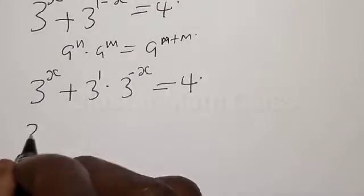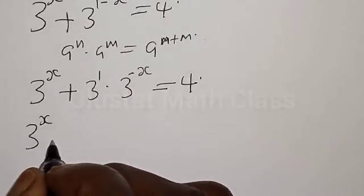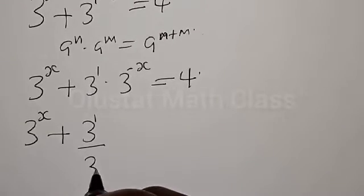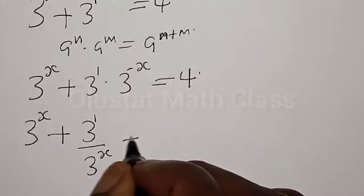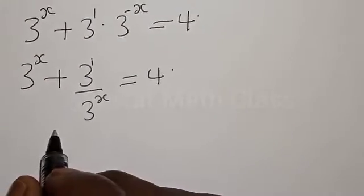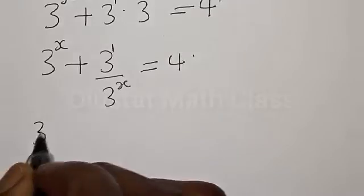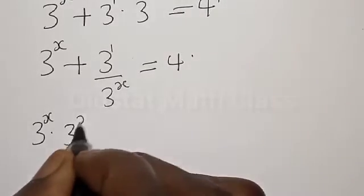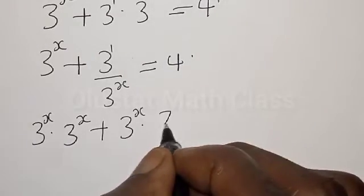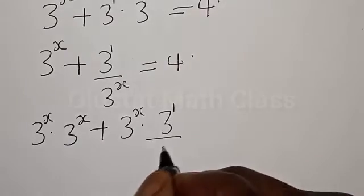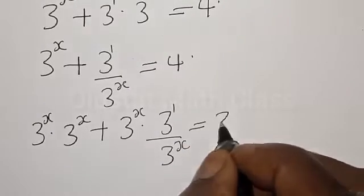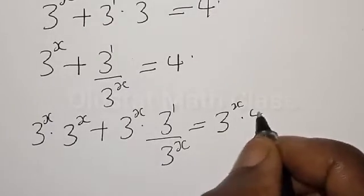Then we have 3 raised to power x plus 3 raised to power 1 over 3 raised to power x is equal to 4. Then let's multiply all terms by 3 raised to power x: 3 raised to power x multiplied by 3 raised to power x plus 3 raised to power 1 over 3 raised to power x, is equal to 3 raised to power x multiplied by 4.